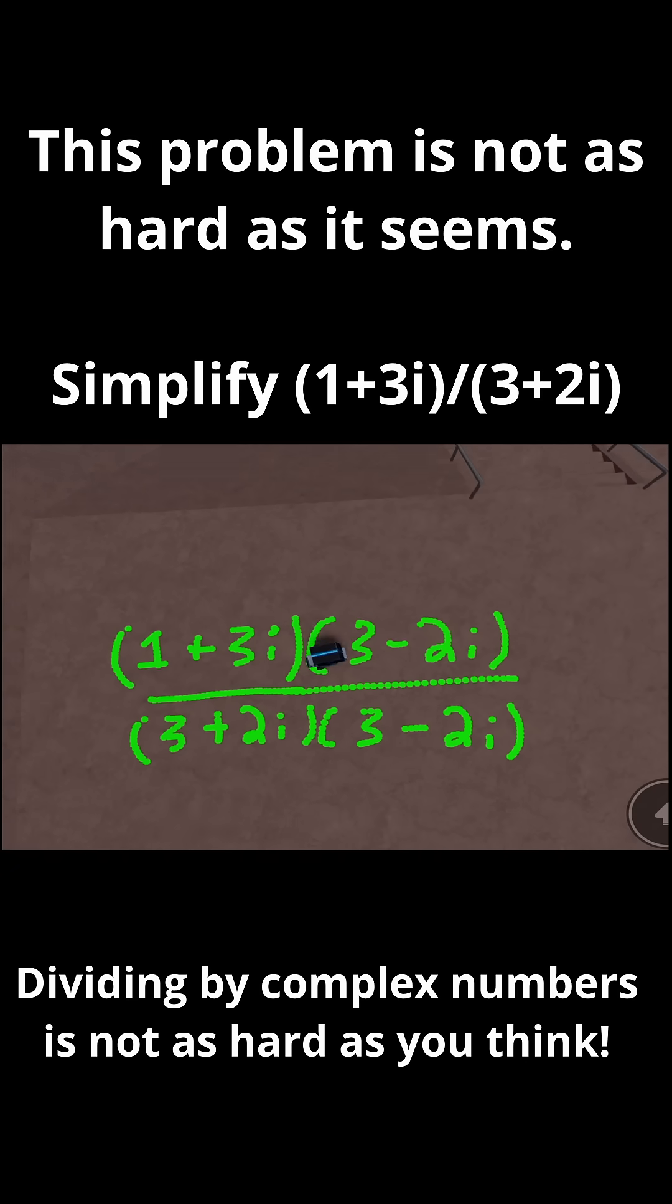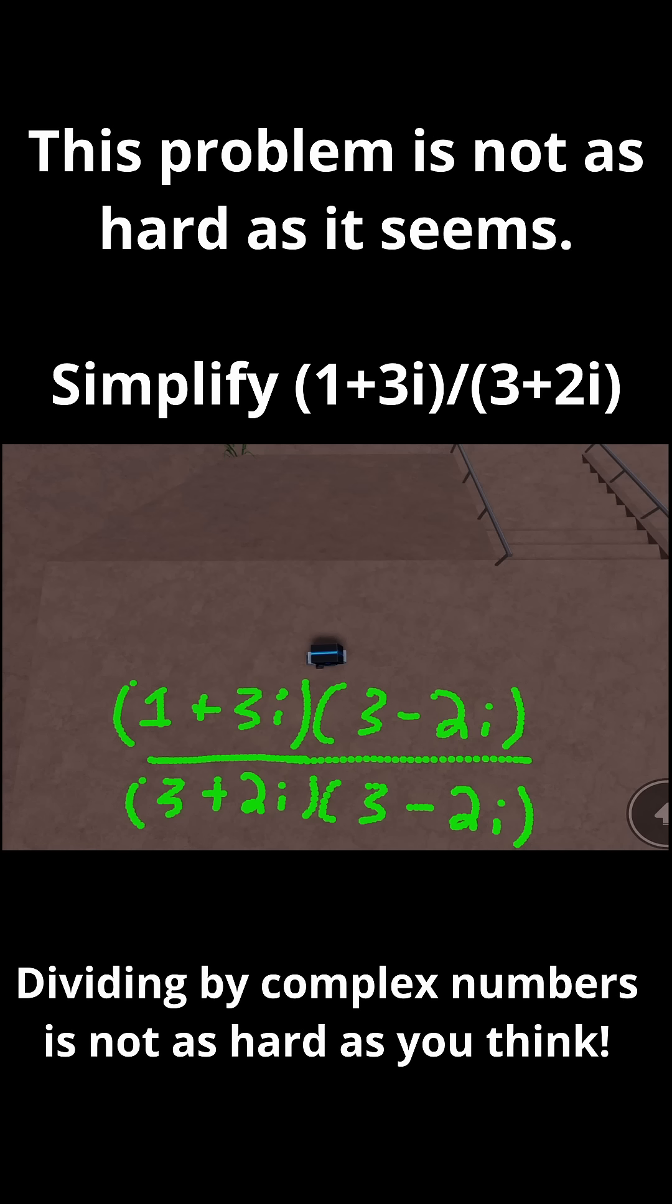So let's work on the numerator first. I have 1 plus 3i times 3 minus 2i. To simplify this, let's do 1 times 3 first. 1 times 3 is just 3. And let's do 1 times minus 2i. That's just minus 2i. And then 3i times 3 is just plus 9i. And then 3i times minus 2i is negative 6i squared.